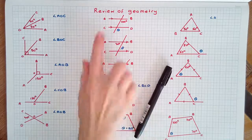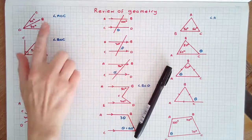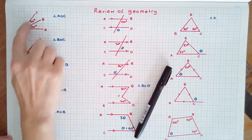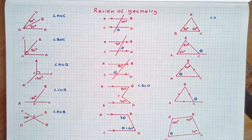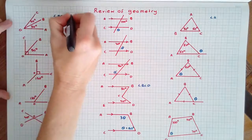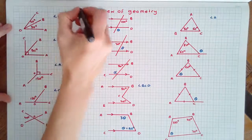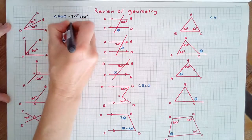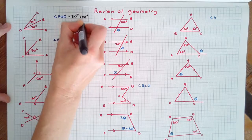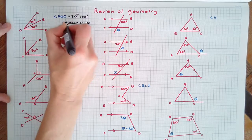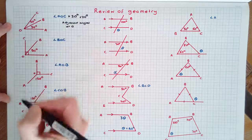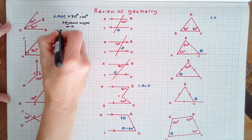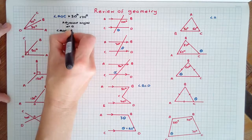In this video we're going to review geometry. Adjacent angles can be added together. To find angle AOC we add 30 degrees plus 20 degrees because they're adjacent angles at O. Therefore angle AOC is 50 degrees.